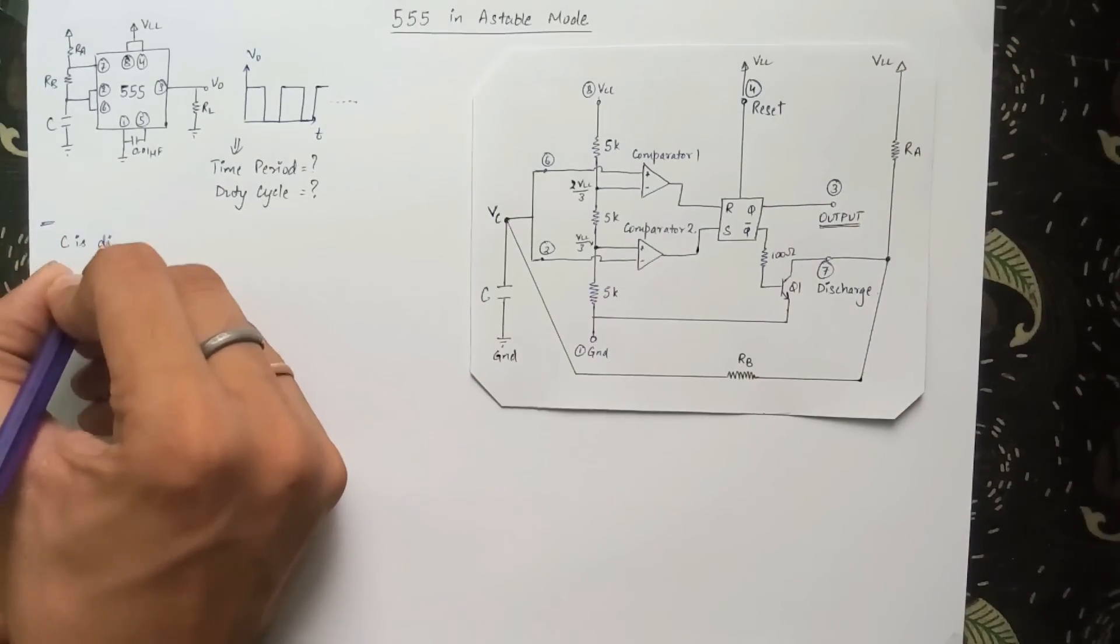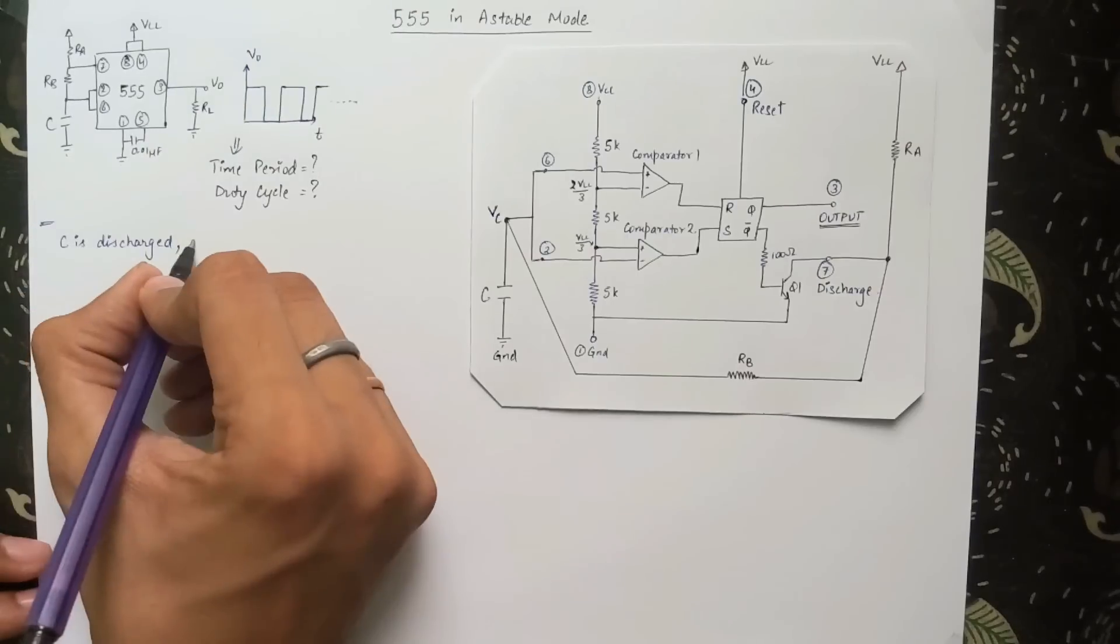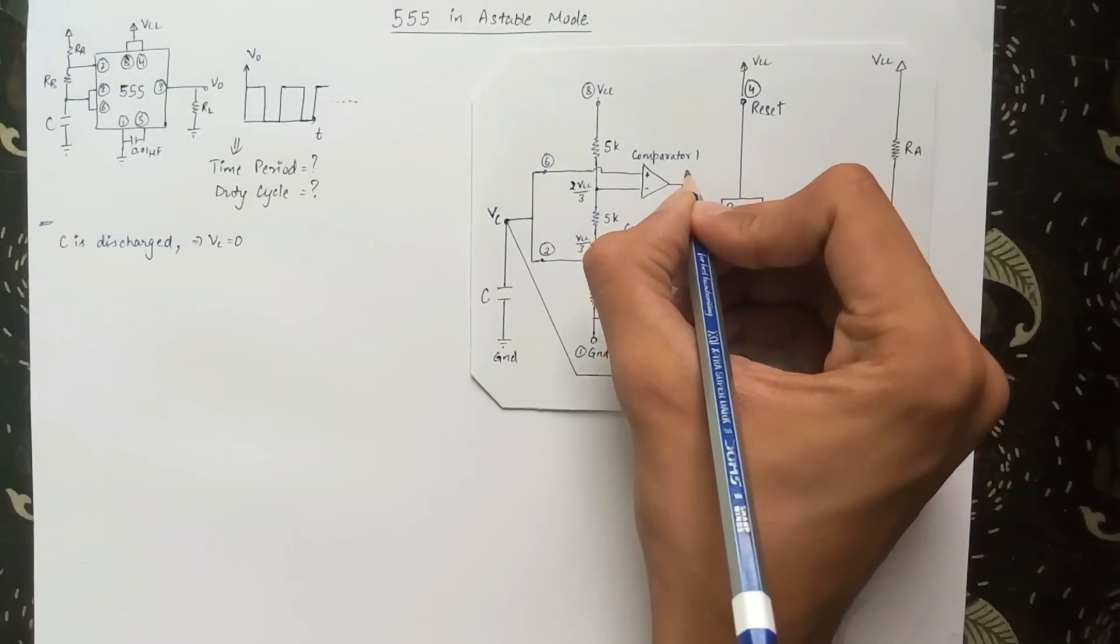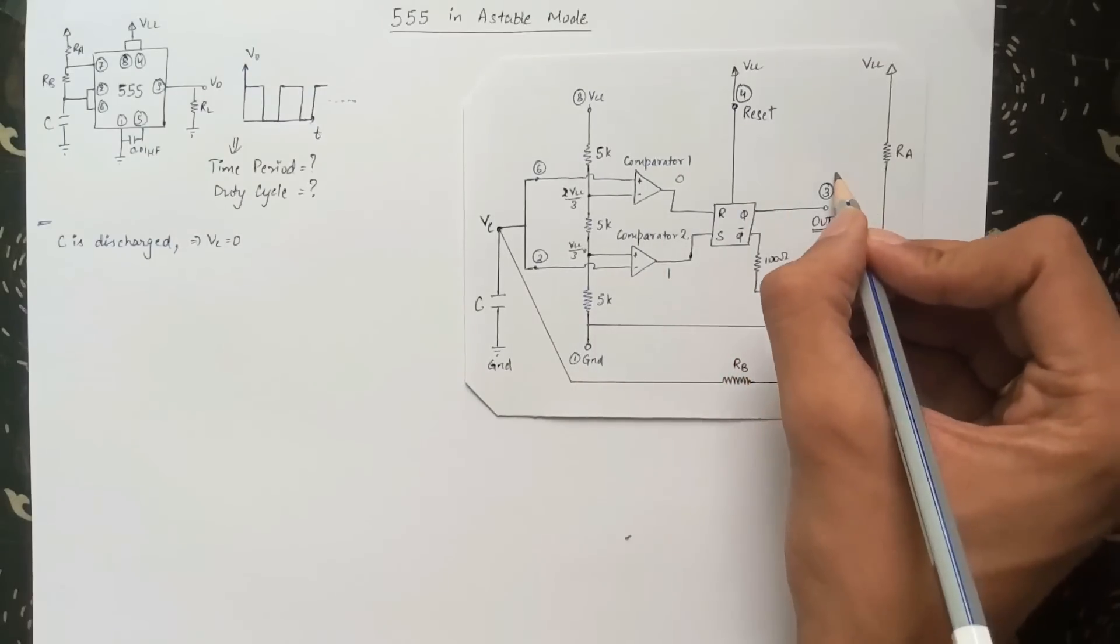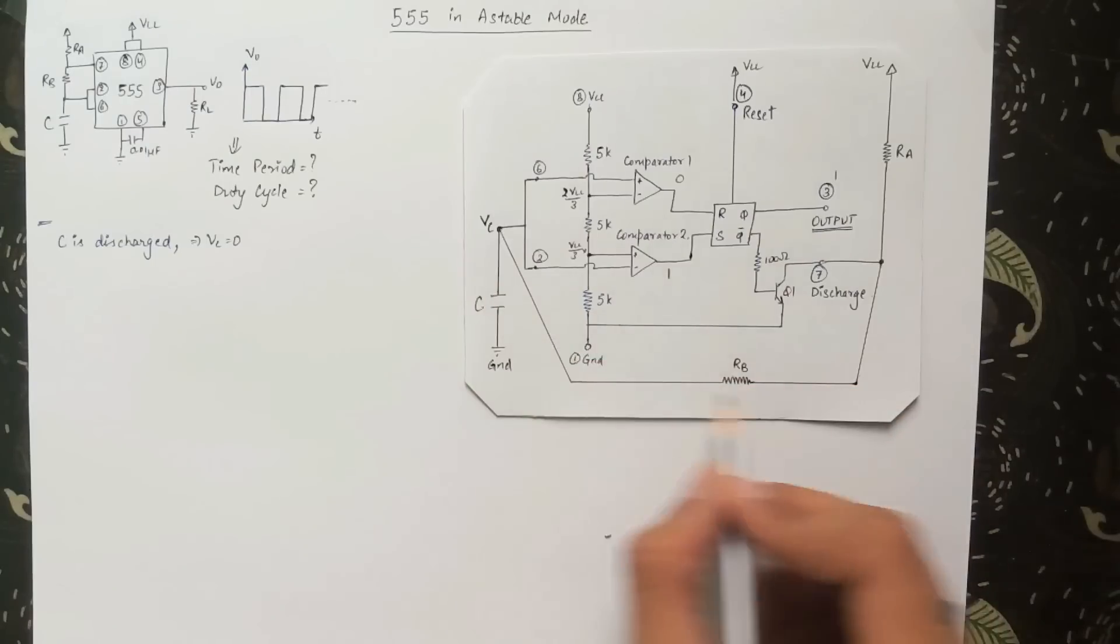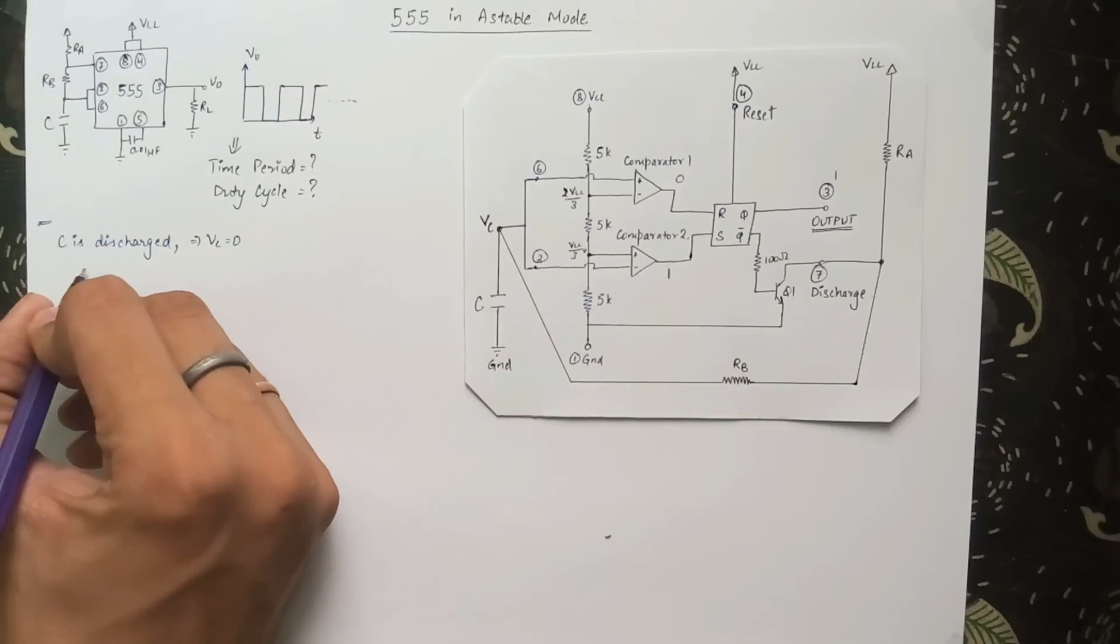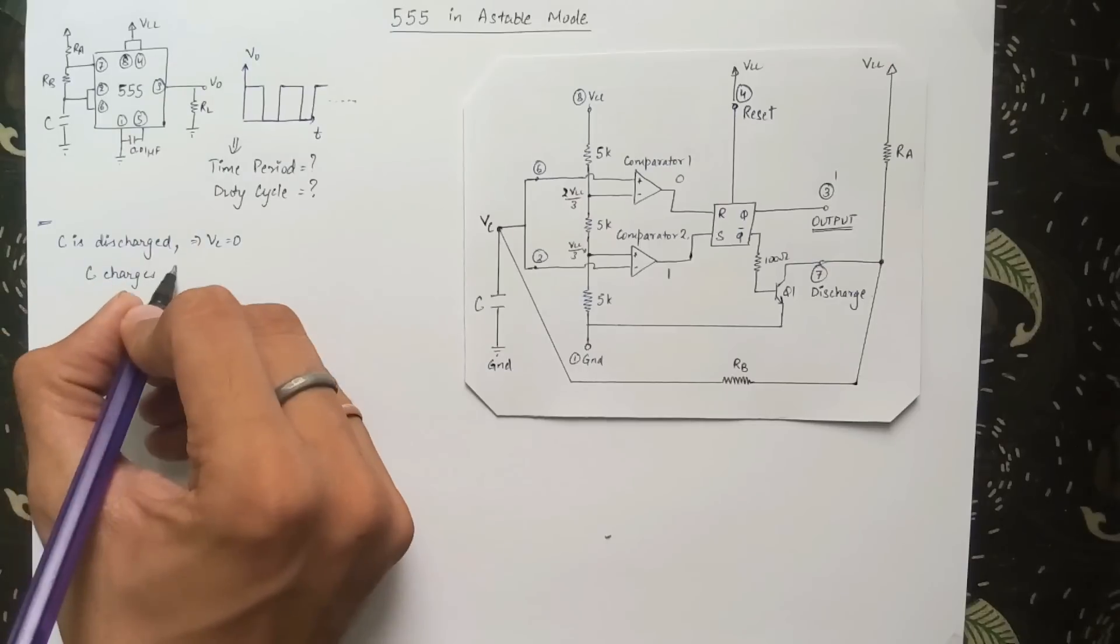Let us assume that the capacitor is discharged initially. Therefore, the voltage across the capacitor will be zero. This will be fed to input 2 and 6 of the IC. Therefore, the output of comparator 1 will be zero and that of comparator 2 will be one. For zero and one as input to the RS flip-flop, the output of that flip-flop is logic one. And therefore, the Q1 transistor is in cutoff, and there is an open circuit between pin 7 and ground.